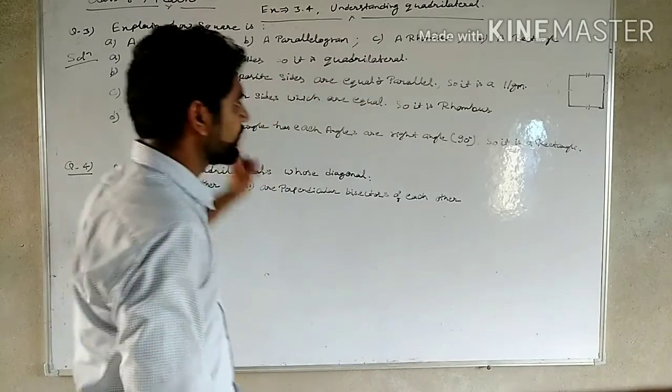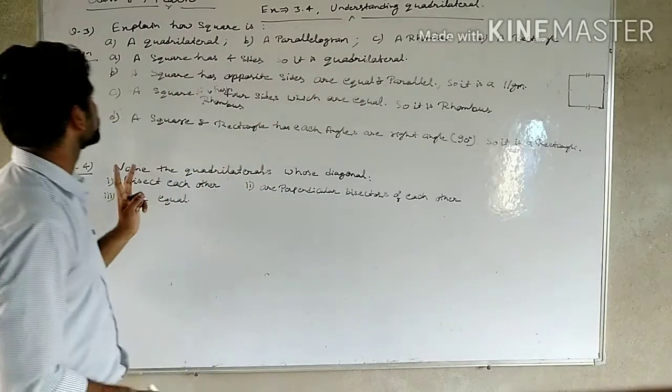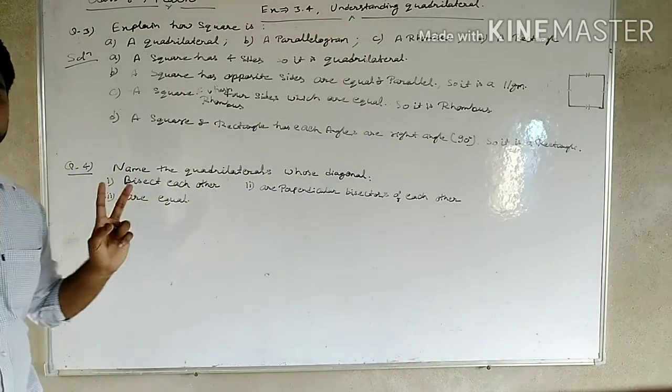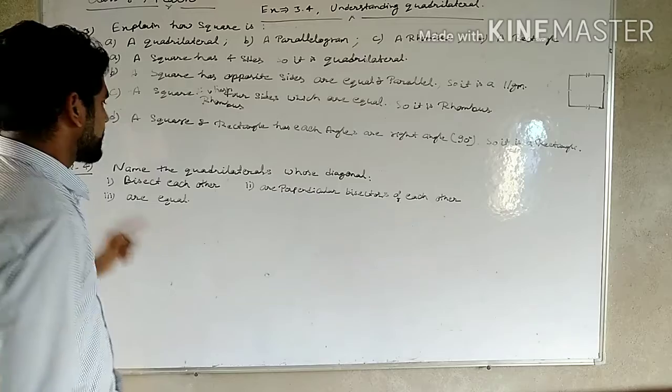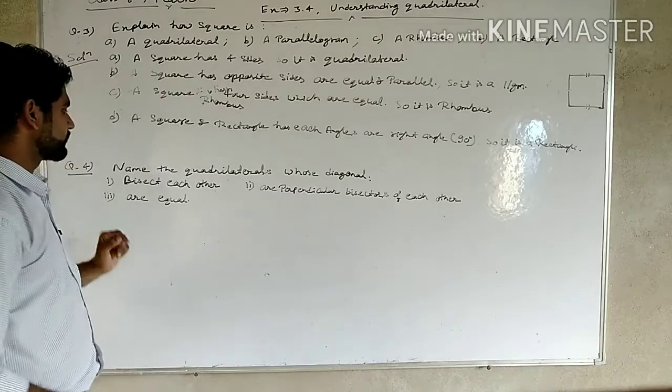So, to summarize: a square is a quadrilateral, a square is a parallelogram, a square is a rhombus, and a square is a rectangle. I hope you have understood Question Number 3 very easily. Next is Question Number 4.